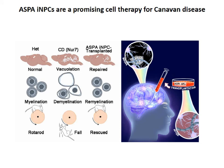In summary, the ASPA-NPC could rescue vacuolation, myelination defect, and behavioral defect in the transplanted CD mouse model. Therefore, they are promising cellular therapy for Canavan disease patients to rescue the spongy degeneration and myelination defect, with the hope to rescue the motor function deficit and prolong the lifespan.